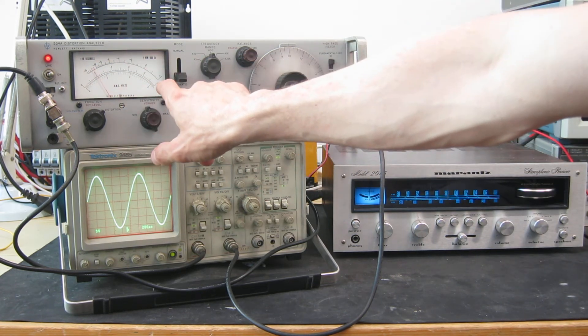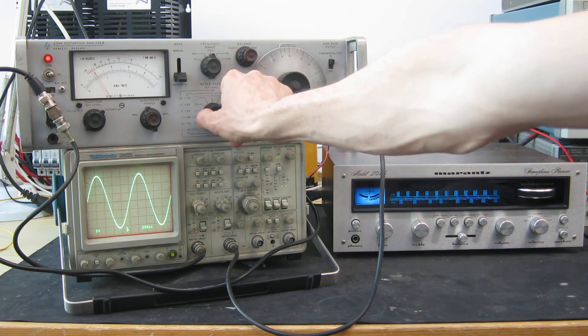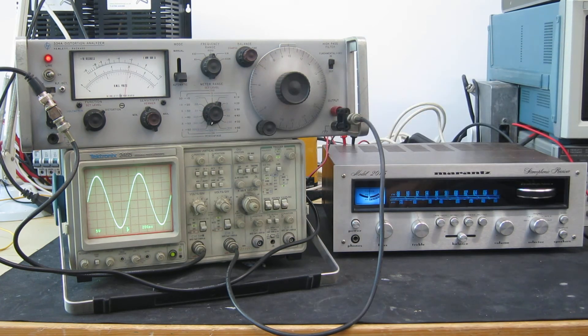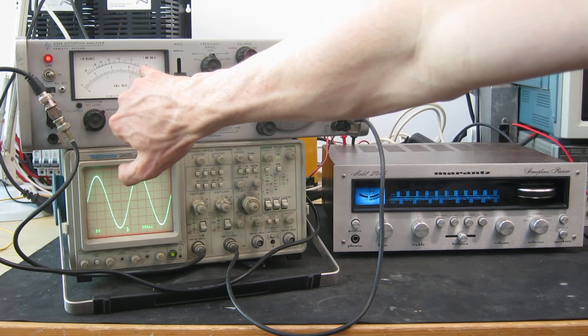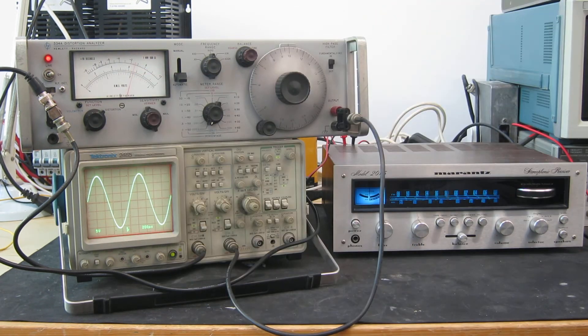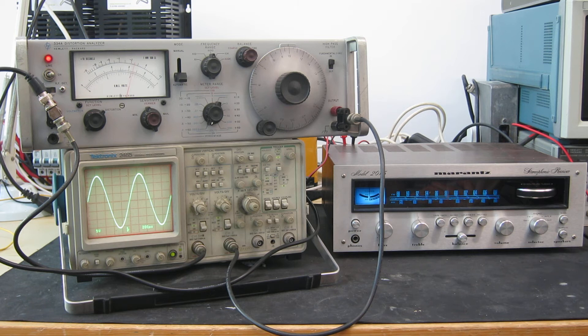This is on the 0.3% distortion scale. If we take it all the way down to 0.1% scale what do we get? On the 0.1% scale we're reading about 0.065% distortion which is very very low indeed. That's actually the distortion of the signal generator itself. I've measured that independently. Now the manufacturer's rating is 0.9% so we're much much lower than the manufacturer's rating.